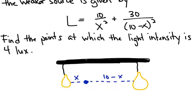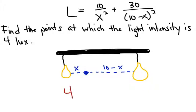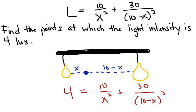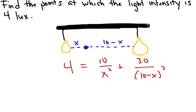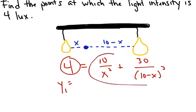The bigger bulb has the higher intensity and the smaller bulb has the lower intensity. The light intensity L at a point x meters from the weaker source is given by L equals 10 over x squared plus 30 over (10 minus x) squared. We want to find the points at which the light intensity is 4 lux — solving 4 equals 10 over x squared plus 30 over (10 minus x) squared. We can plug this into y1 and y2 equals and find where those two graphs intersect each other, which will give us the value of x.